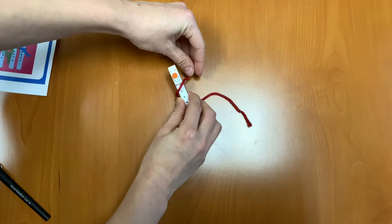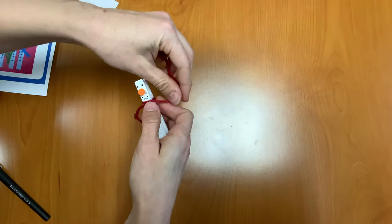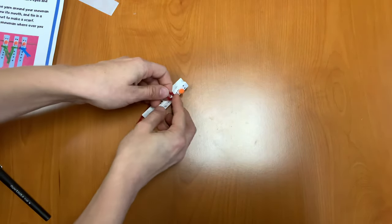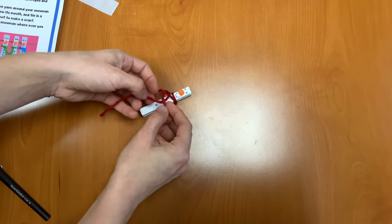We're going to wrap that yarn around him two times. Then we'll just tie it in a double knot for his scarf.